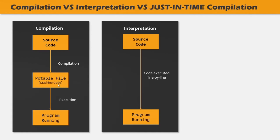In interpretation, we do not have the same two-step process as in compilation. Instead, the code is read, converted, and executed line by line all at the same time. Each line of code is first converted to machine code and then executed immediately, then the next line is converted and executed immediately, and this happens for each line of code in the program. In interpretation, there is no saved machine code like in compilation. In compilation, source code is converted to machine code and saved in a portable file to execute later. But in interpretation, source code is directly converted to machine code and executed immediately — there is no concept of saving the machine code.